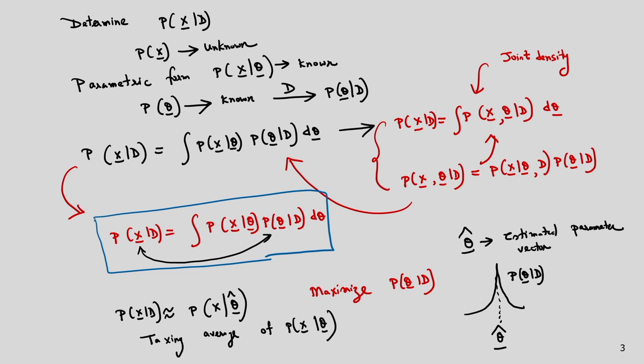We can determine p(x|D): when p(theta|D) is maximum it approaches the Dirac delta function, and p(x|D) is approximately equal to p(x|theta-hat). Next, I will explain how to determine the parameters for the Gaussian case — Bayesian parameter estimation for the univariate normal density.